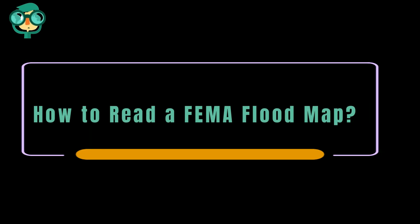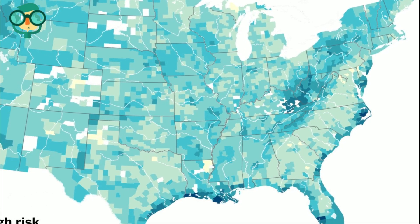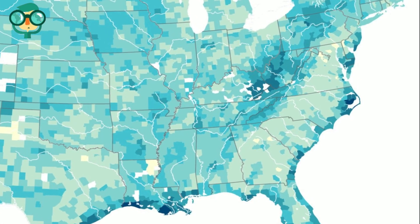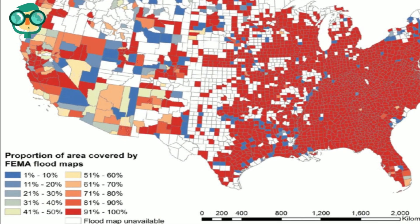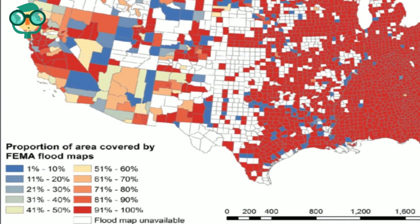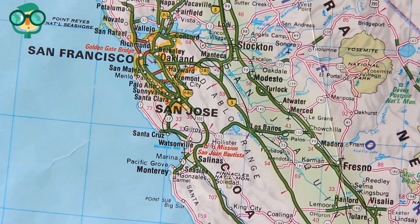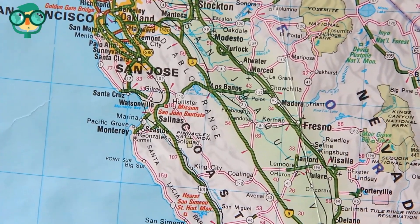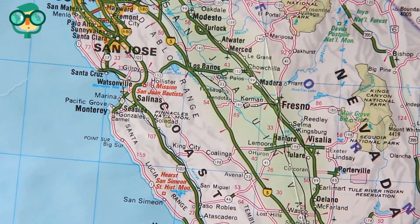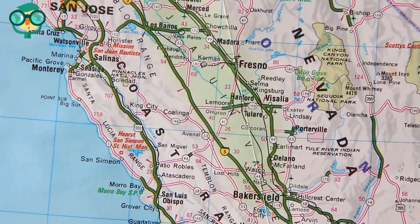Today, we will talk about how to read a FEMA flood map. FEMA flood maps are a useful tool you can access to gain awareness of the chances of flooding in your area. These maps divide areas into risk zones, indicating the frequency and severity of flooding. Each map includes an index page and a legend, explaining any numbers and symbols that appear on it. Flood maps are easy to understand, so take advantage of them to prepare for the chance of flooding in your area.